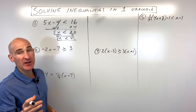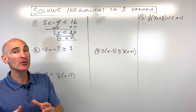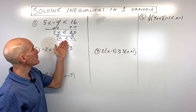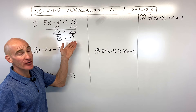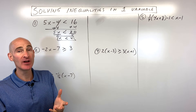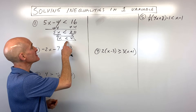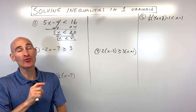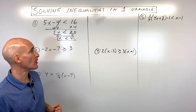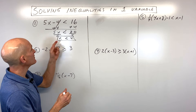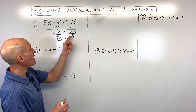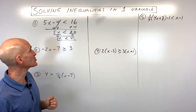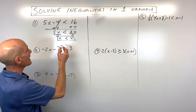One thing you want to be careful of when you're working with inequalities is that if you multiply or divide both sides by a negative number, this inequality sign will change directions — or flip. But in this case, we divided by positive five so it doesn't change direction.